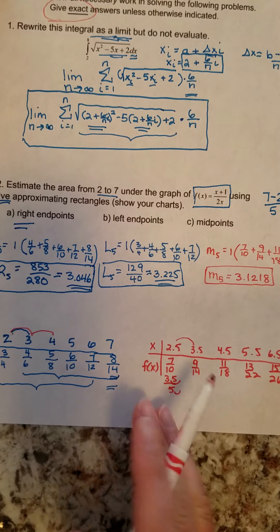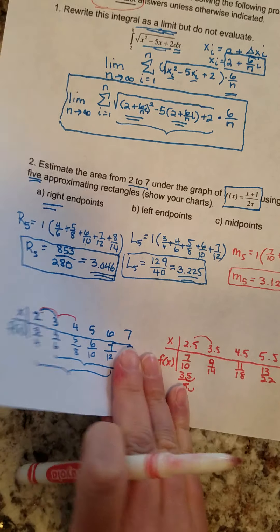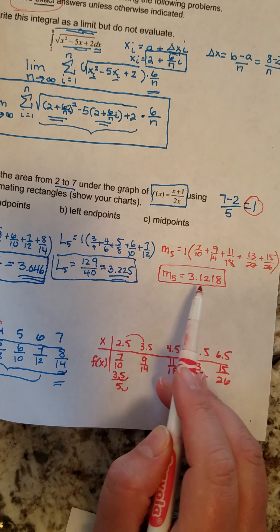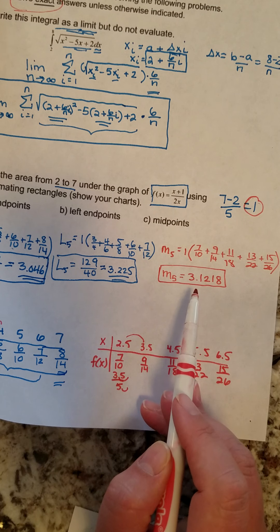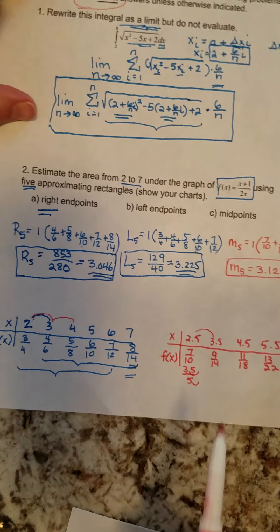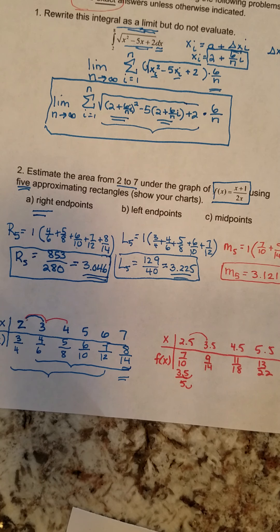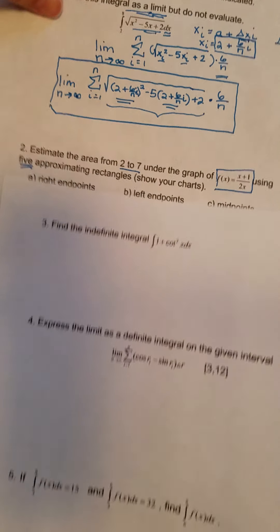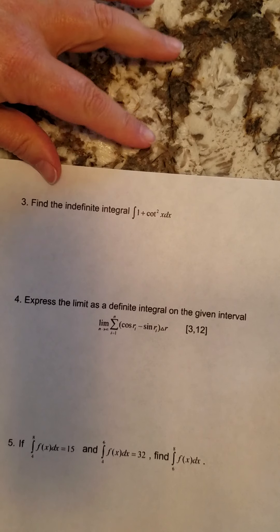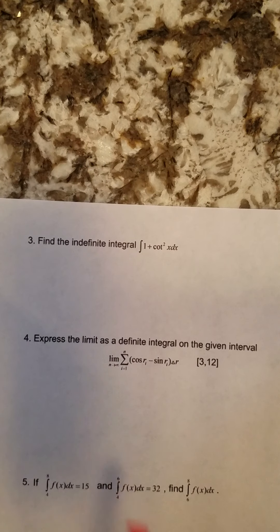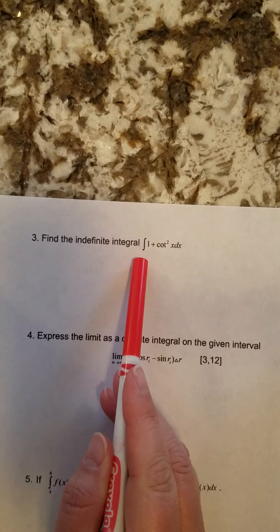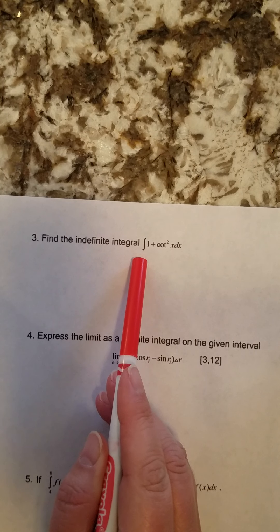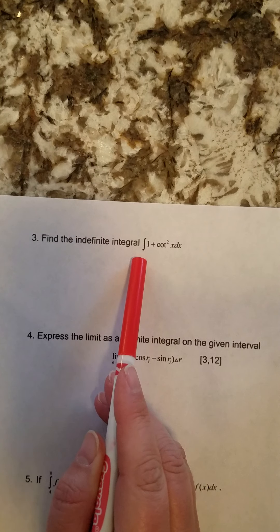So for these down here, as long as you have the work with all of these fractions, I'll be a little lenient with these decimals, but please understand your work is worth more points than your actual answer is. Alright, so that finishes up page one of your review. Now let's move on to page two. Page two says find the indefinite integral of 1 plus cotangent squared x dx.